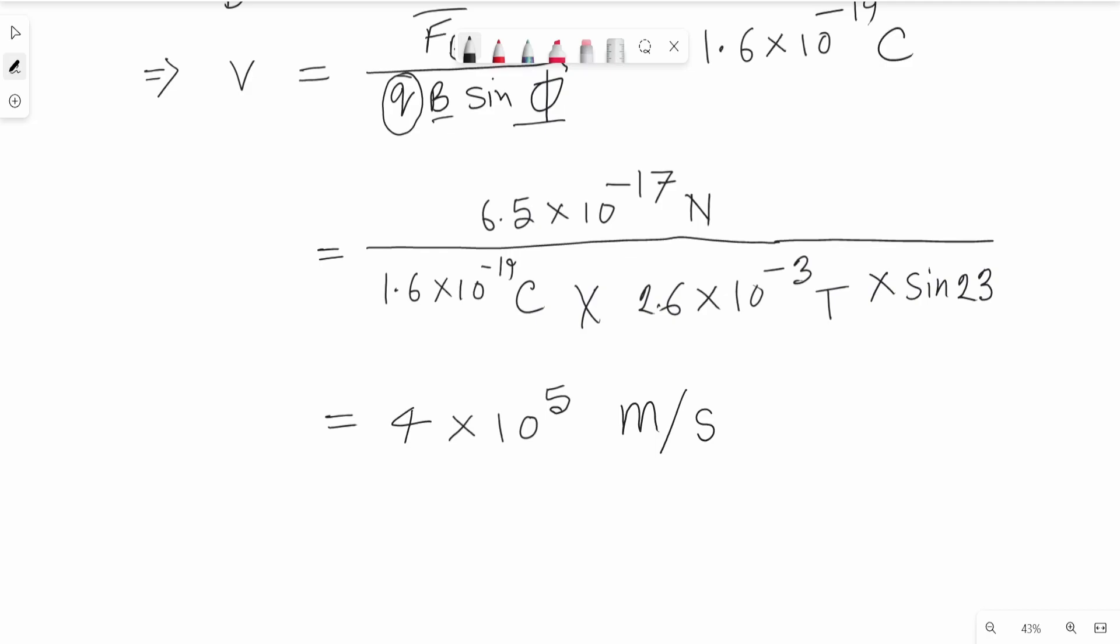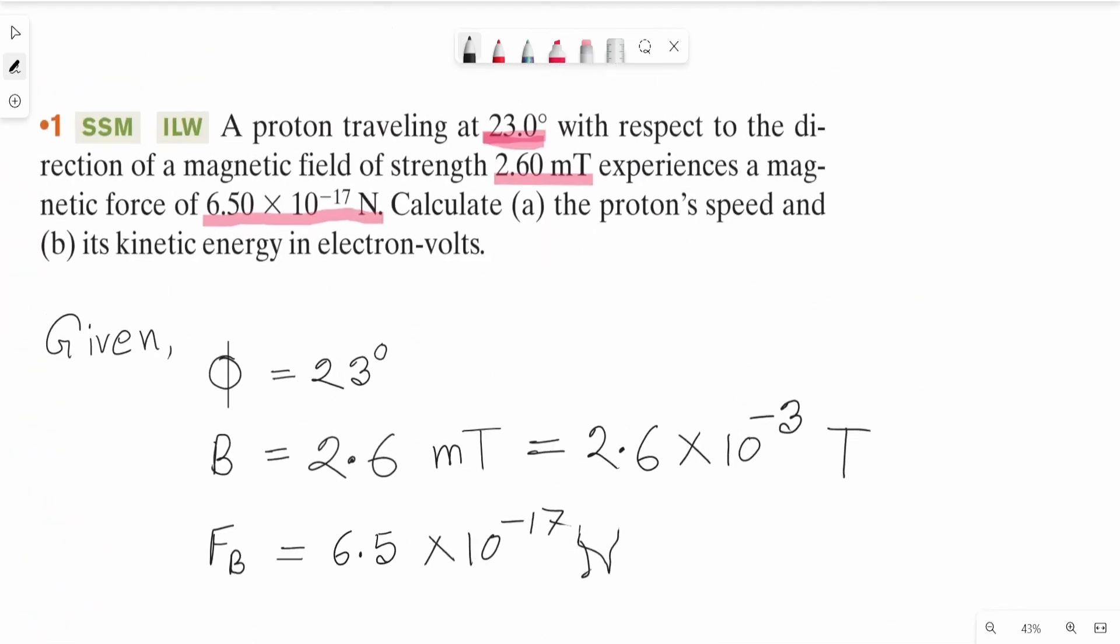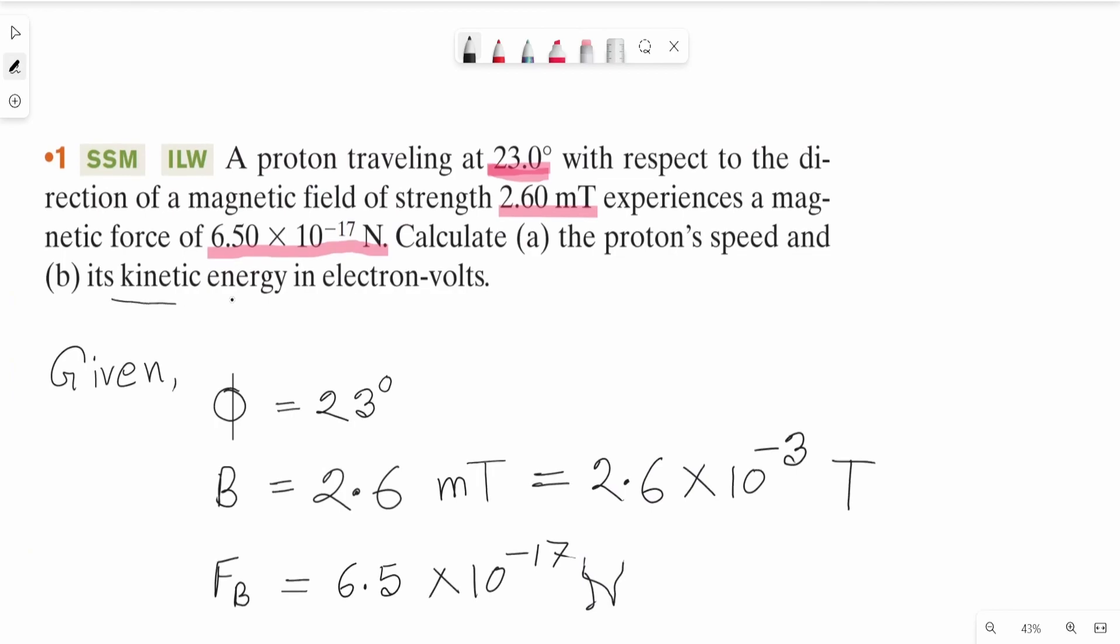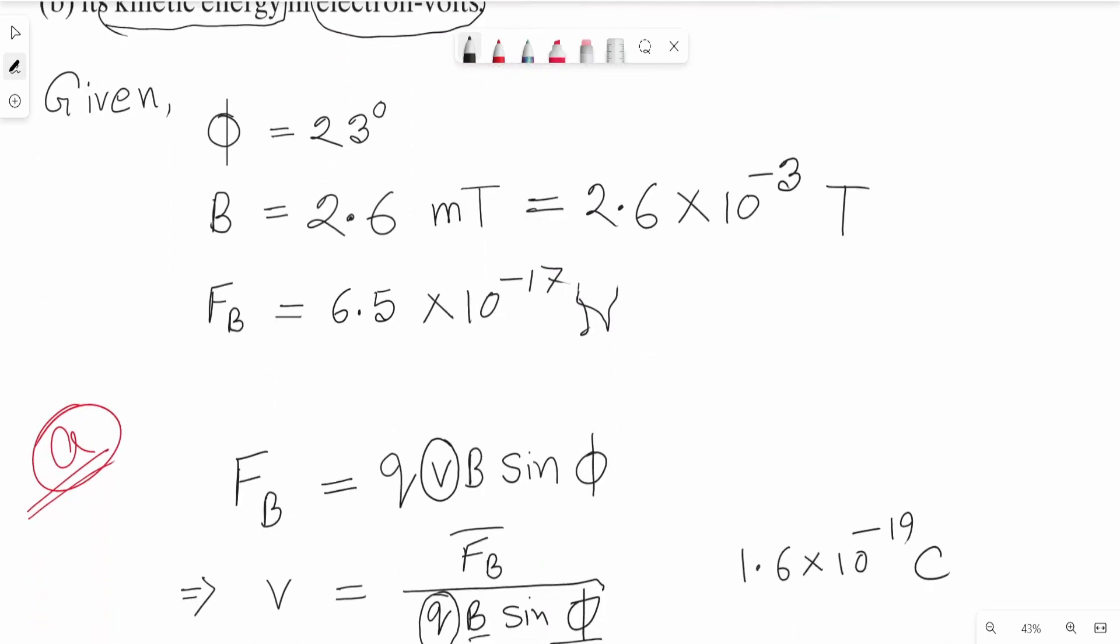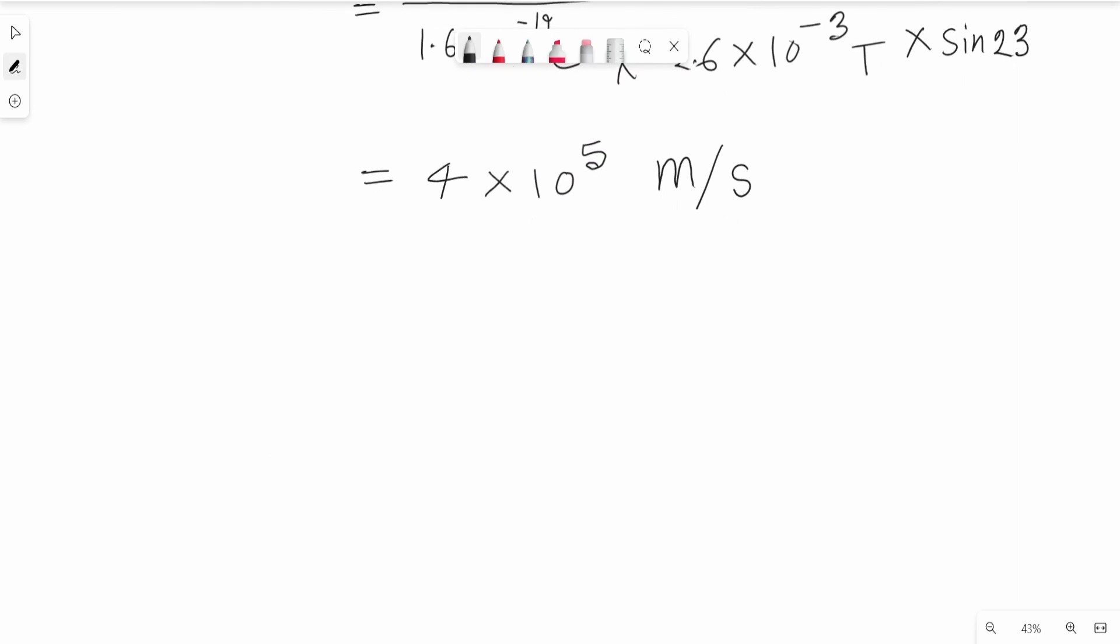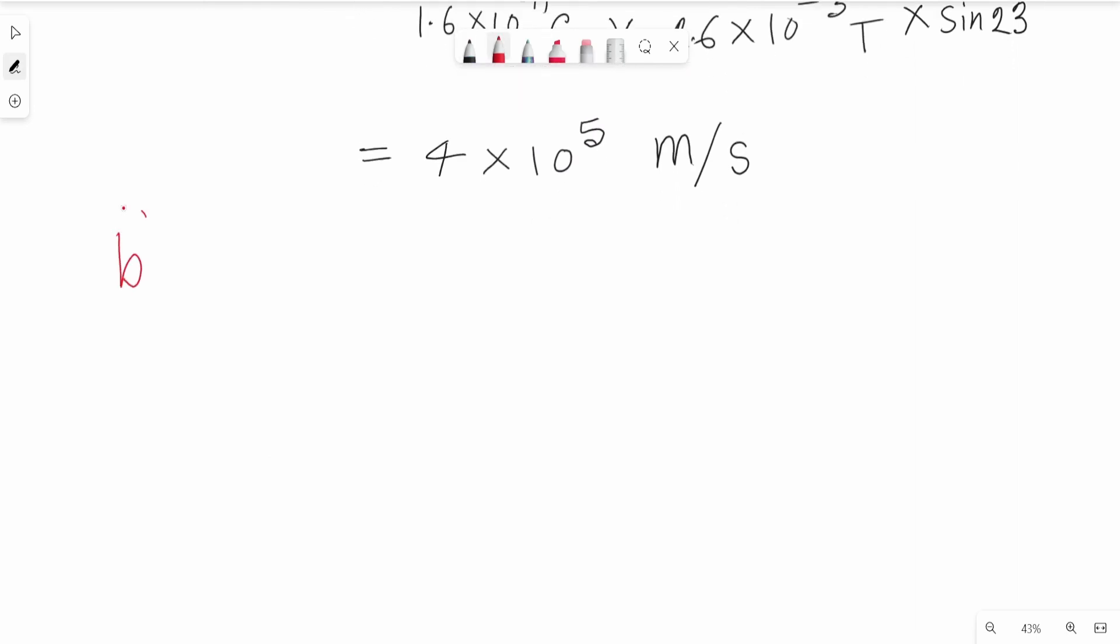For part B, we need to find the kinetic energy in electron volts. We know kinetic energy can be written as one half m V squared. The mass m of the proton is 1.67 into 10 to the power minus 27 kilograms.